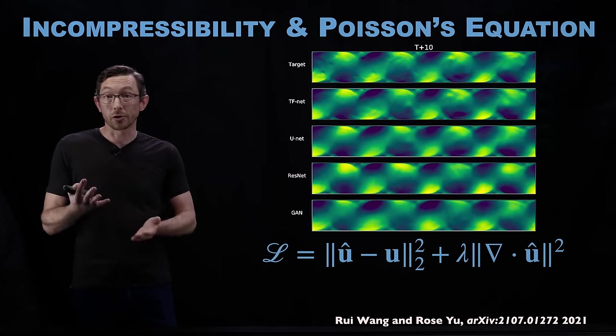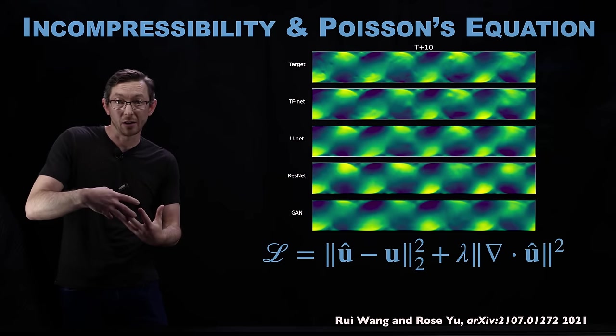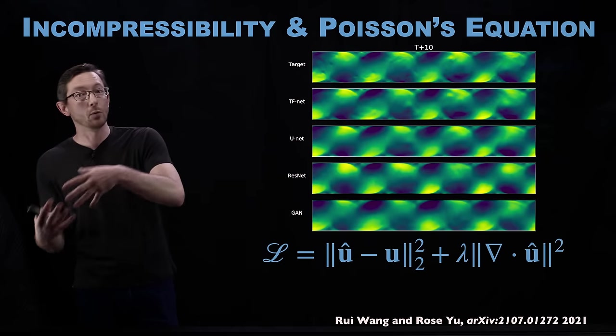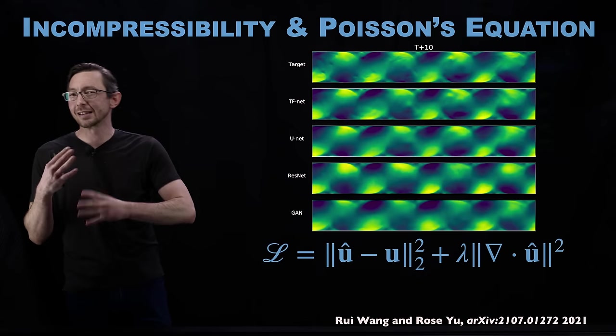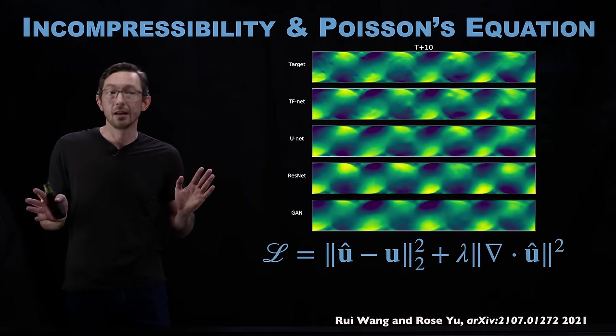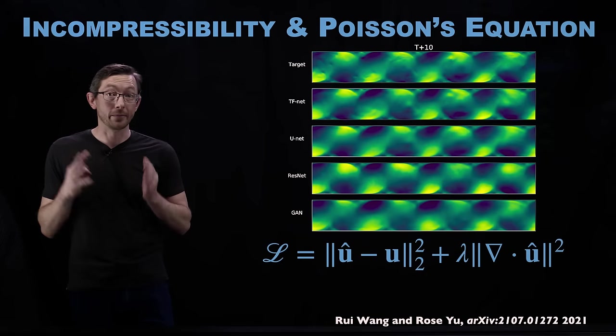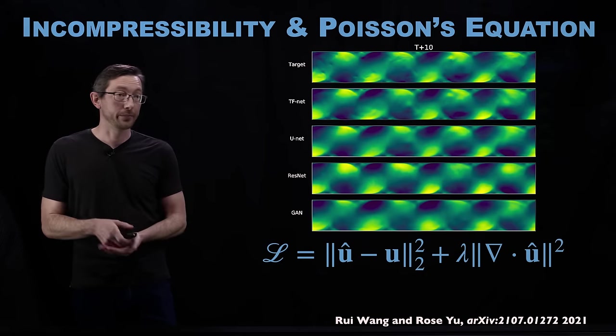It may or may not be harder to train — it might make your optimization stiffer or find weird minima. It's not a silver bullet, but it's a really clever idea. If you know some conservation law or partial differential equation, you can add it as a loss function and start promoting physicality.